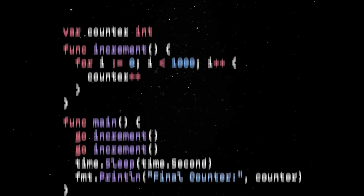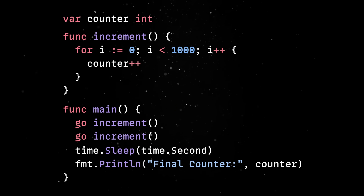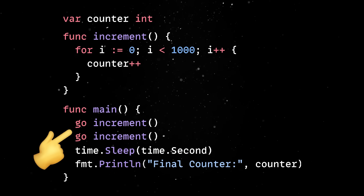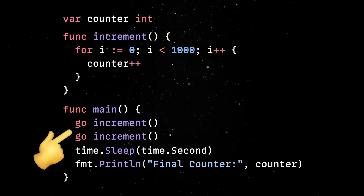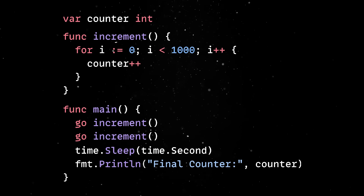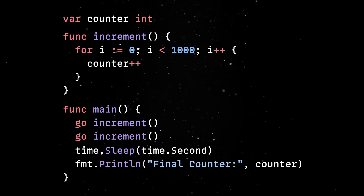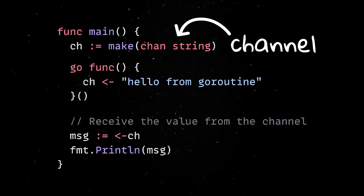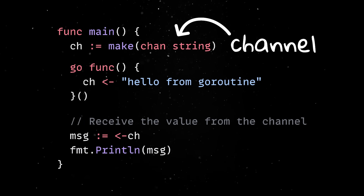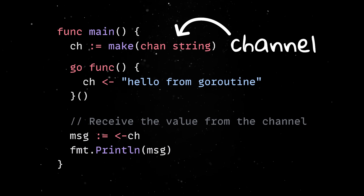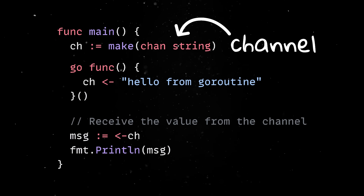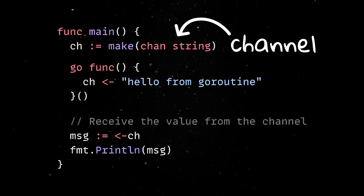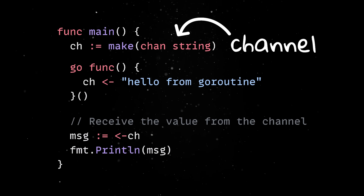But the real concurrency complexity shows up when you're trying to coordinate your tasks. This is when race conditions and deadlocks start to creep in, and when one of Go's most important features comes into play. Channels are Go's built-in mechanism for communication between Go routines. Instead of sharing memory and trying to protect it with locks, Go encourages a different approach: you don't communicate by sharing memory — you share memory by communicating.